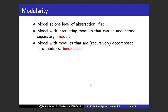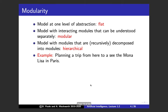The first dimension is modularity. You can model at one level of abstraction, which we call flat. But like writing a program in modules, you can model something with interacting modules that can be understood separately — that's a modular system. You can also model hierarchically, where modules are recursively decomposed into sub-modules — that's a hierarchical system. For example, planning a trip to see the Mona Lisa in Paris: reasoning at one flat level gets complicated very quickly.